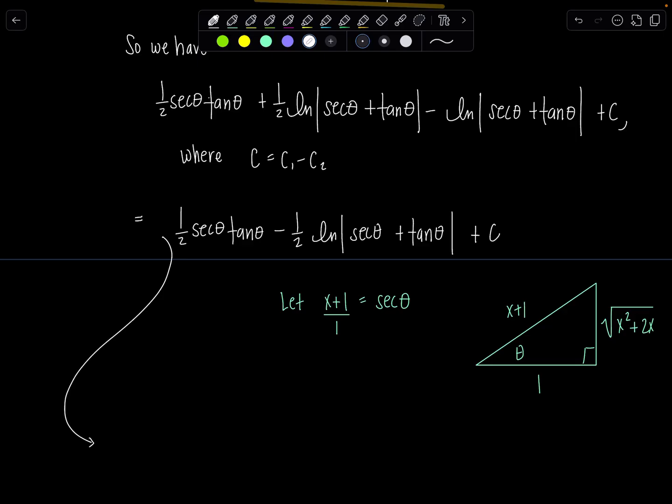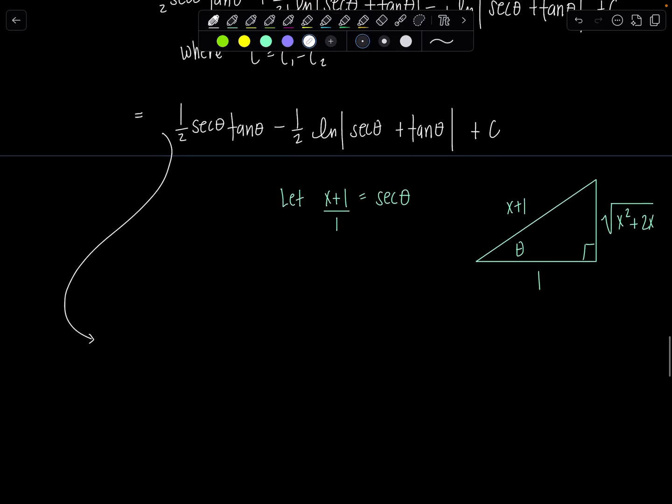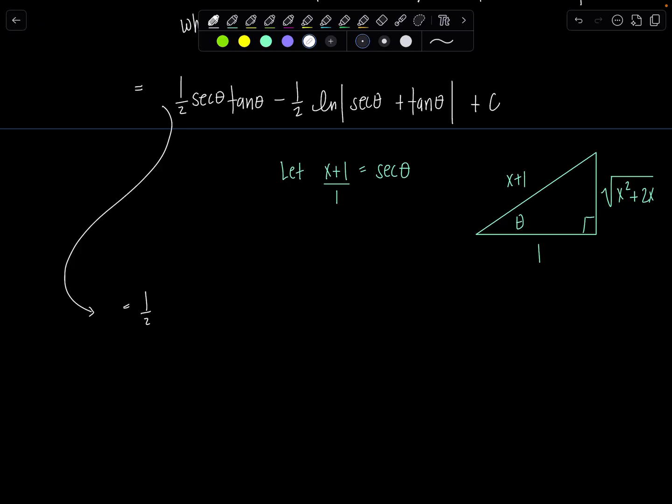Okay, so we're nearly there. Nearly there. Now, use the triangle to rewrite everything in terms of x. So we'll have 1/2. Instead of secant theta, I'll have x+1. And then tan theta, tangent is the ratio of opposite side over the adjacent side. So that would just be simply √(x²+2x) minus 1/2 natural log absolute value. Secant theta is x+1 plus tan theta. Again, √(x²+2x). And then plus c. And we're done.